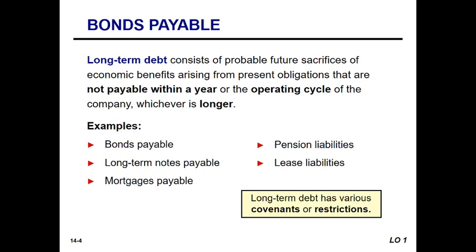Important issues related to long-term debt should always be included in the financial statements or the notes to the financial statements. Included in long-term debt liabilities are bonds payable, mortgage payables, long-term notes payable, lease obligations, and pension obligations. Bonds and notes payable are the main sources of debt funding for corporations. Within the bylaws of an organization you will find the rules related to whether the board, officers, or stockholders must vote to enter into these contracts.